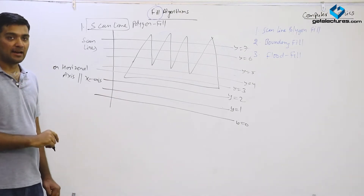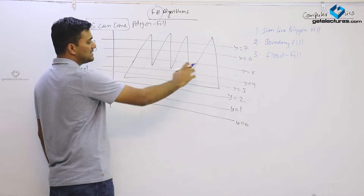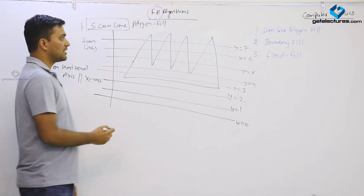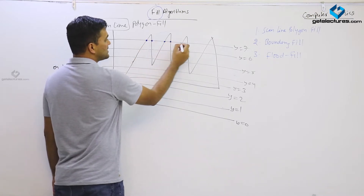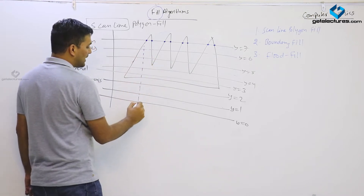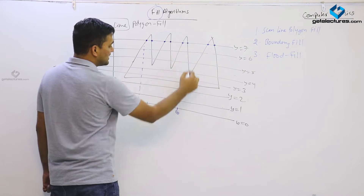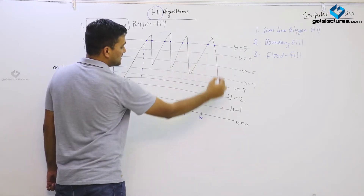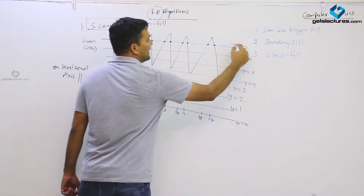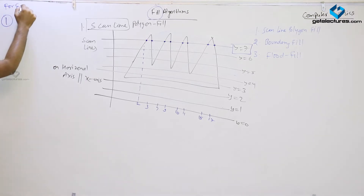For each scan line, we have to find out the intersection points — the intersections of the scan line with the edges of the polygon. Let us discuss the procedure. For scan line y = 7, the intersection points are at x values 2, 3, 7, 9, 10, 11, 15, and 17. So the first step is: for each scan line, find the intersection points with the polygon edges.